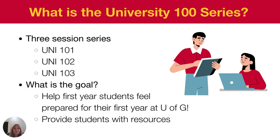So what is the University 100 series? This is a three-session series developed for new students to get used to campus and feel ready to be a university student. There are three sessions: University 101, 102, and 103. In this session we're covering wayfinding. In 102, you'll learn about how to get involved on campus through volunteering or joining clubs, and we'll share some non-academic resources. In University 103, we'll share student tips and tricks for academics and wellness, as well as the resources available on campus.